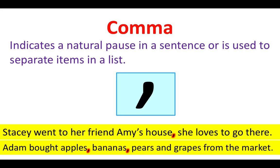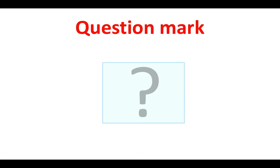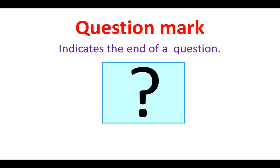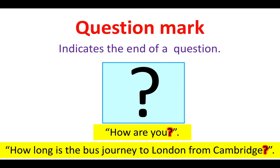Adam bought apples, bananas, pears, and grapes from the market. This example shows us where a comma can be used to separate items in a list. Question mark. A question mark indicates the end of a question. For example: How are you? Or: How long is the bus journey to London from Cambridge?